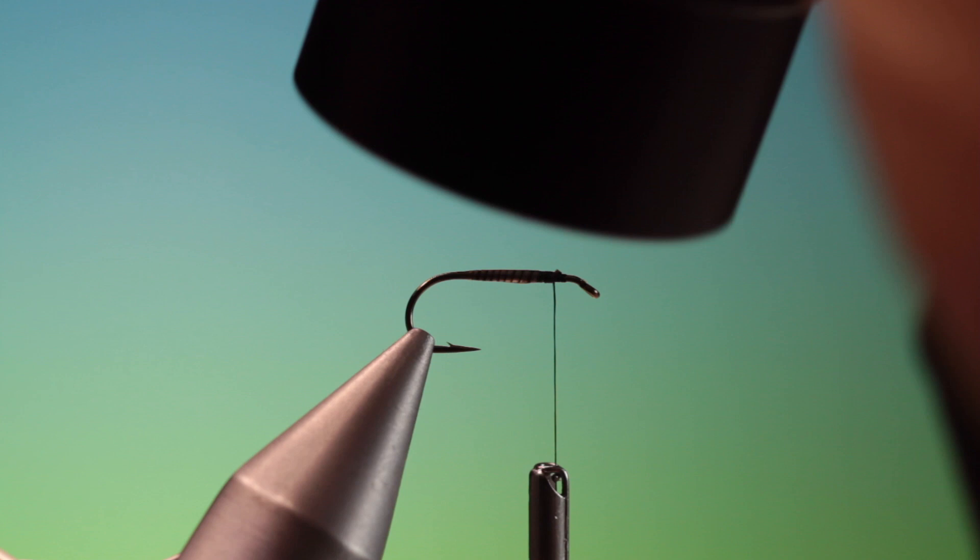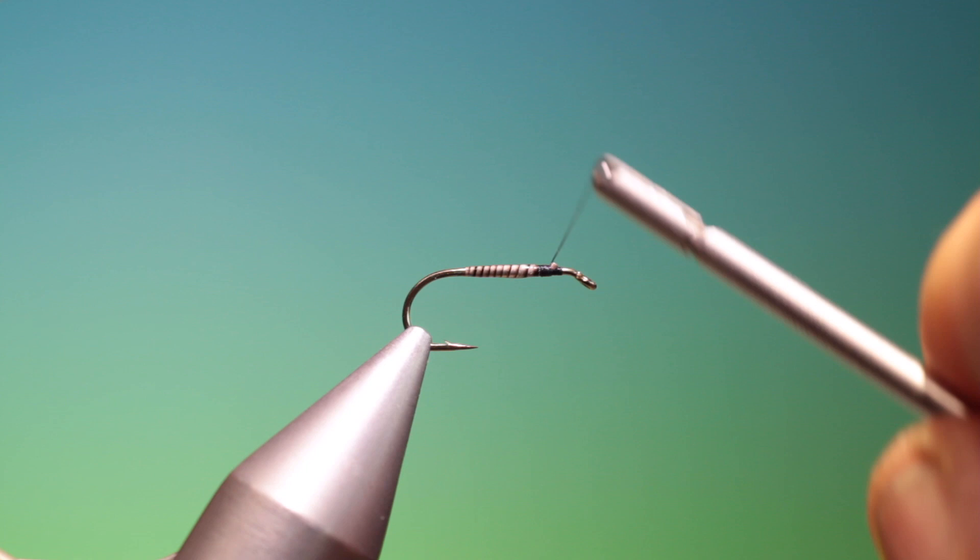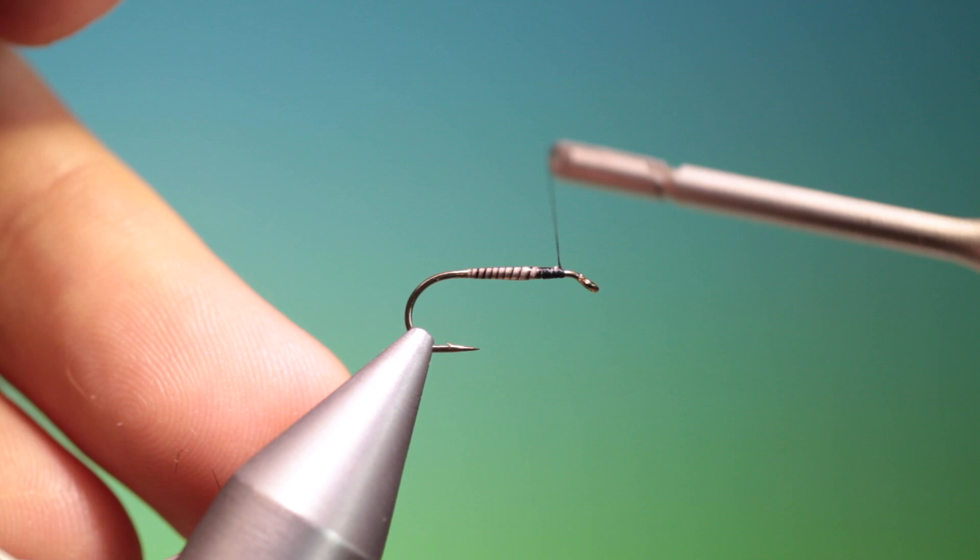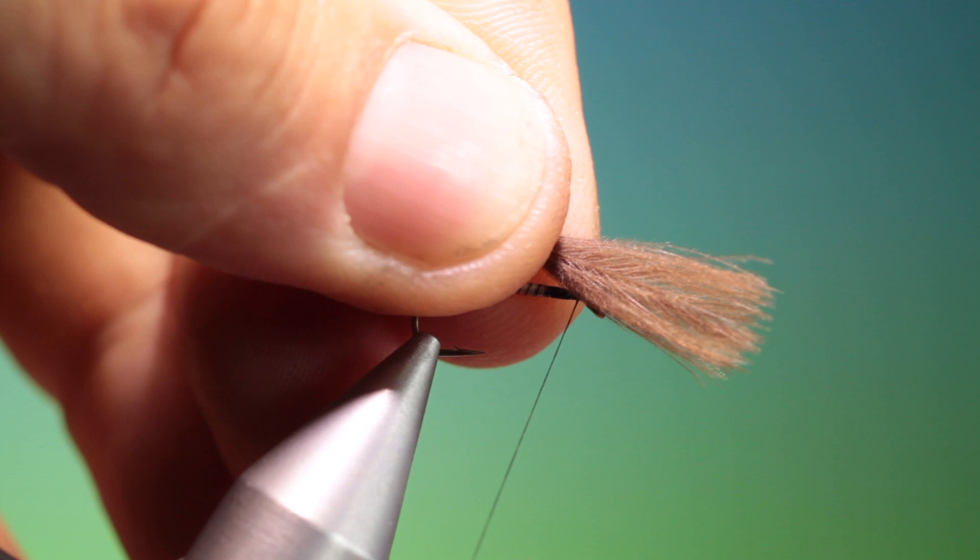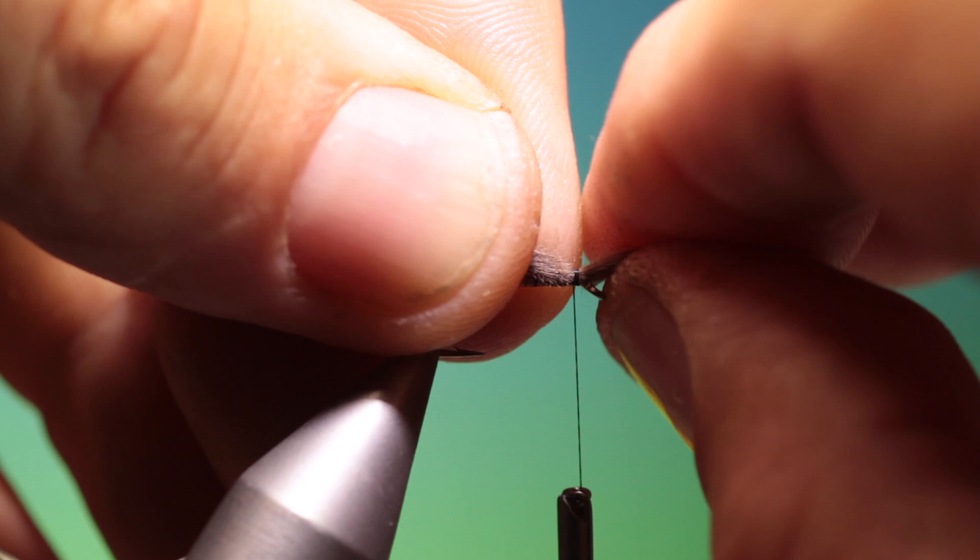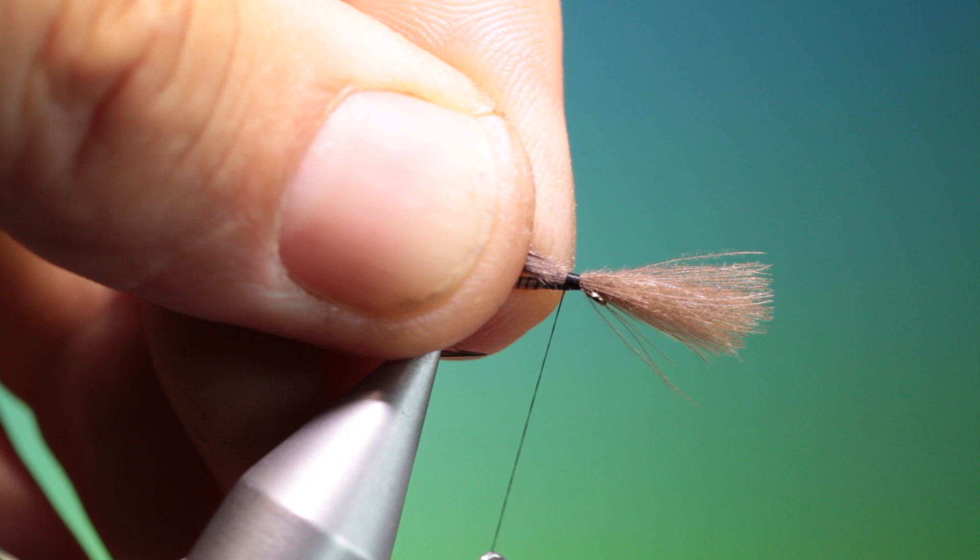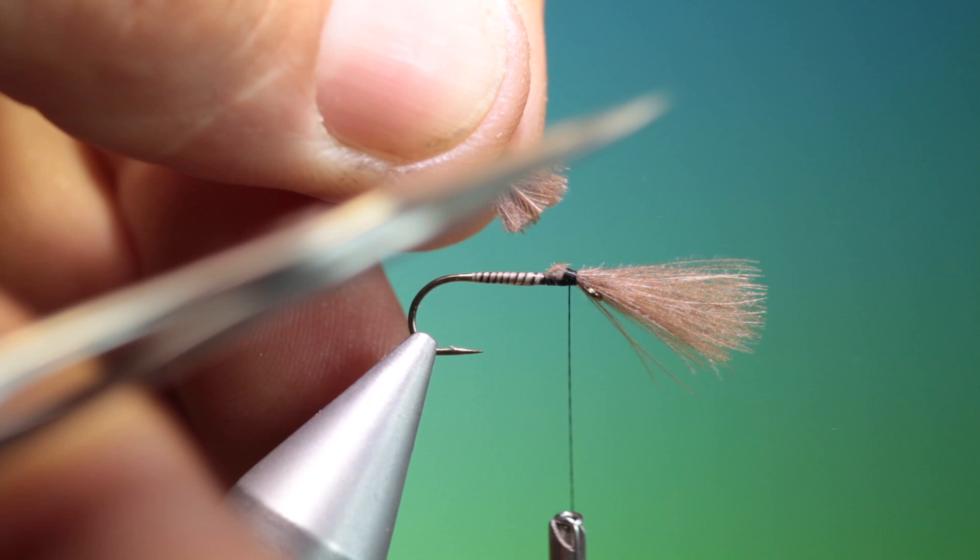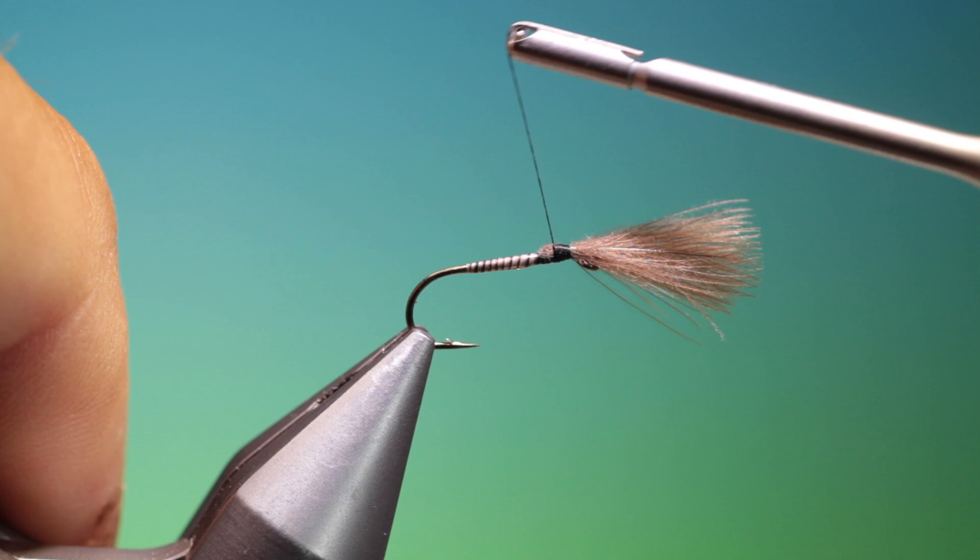Now we need three or four CDC hackles. Just go forward a little bit there. We want to put these in. Just position those. There we are. And just go back a few turns and we trim those off. Secure those.